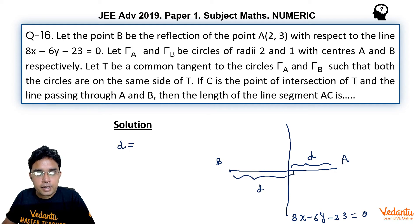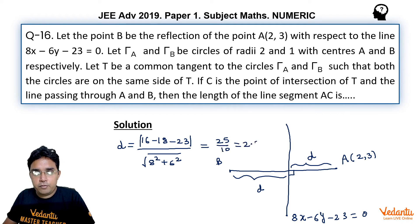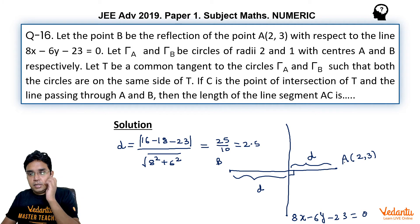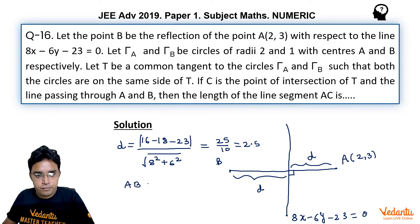This D can be calculated very easily. If we put coordinate of A into this line and divide by root A square plus B square. So we get 8x minus 23 mod upon under root of 8 square plus 6 square. So if we simplify it we get 25 in the numerator and 10 in the denominator. So this comes out to be 2.5 which means distance between AB will be 5 units.